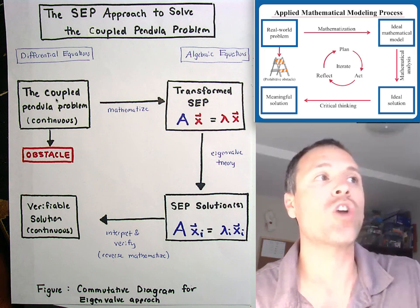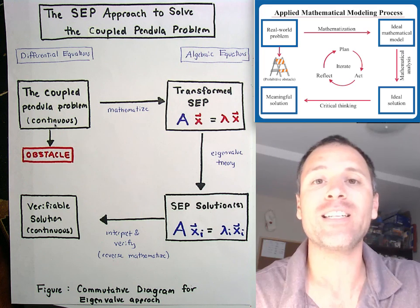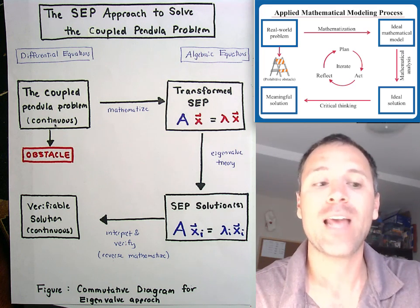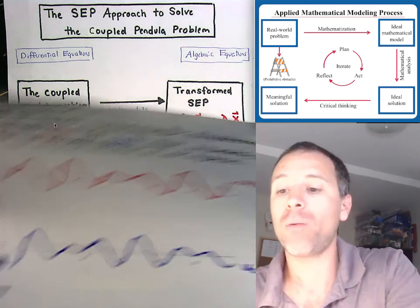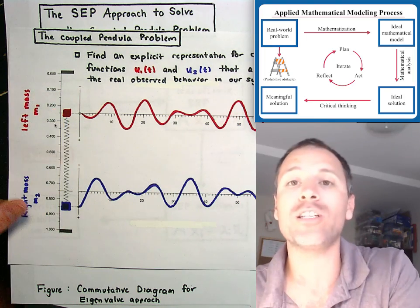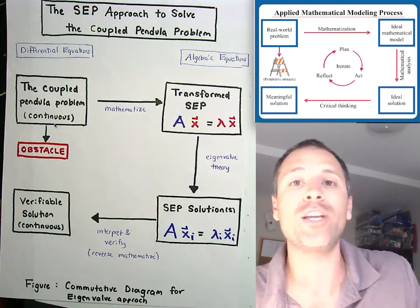So for example, when we start with a coupled pendulum problem, that is a continuous problem and exists in time and space. And the behavior of that problem depends on continuous functions and what we call differential equations.